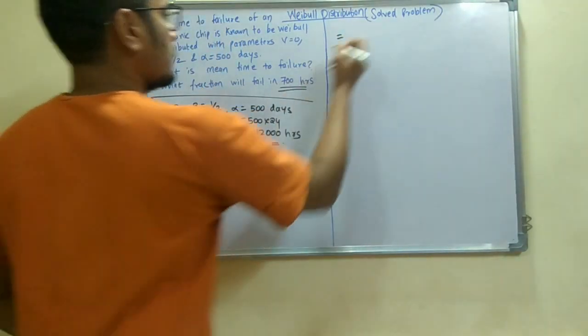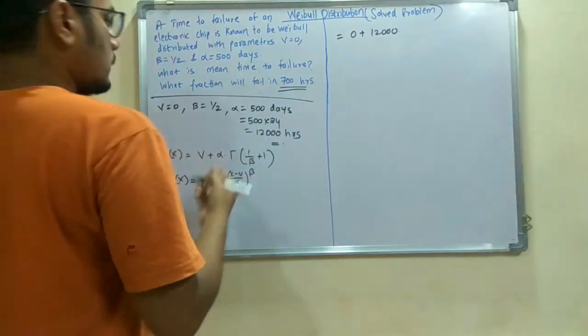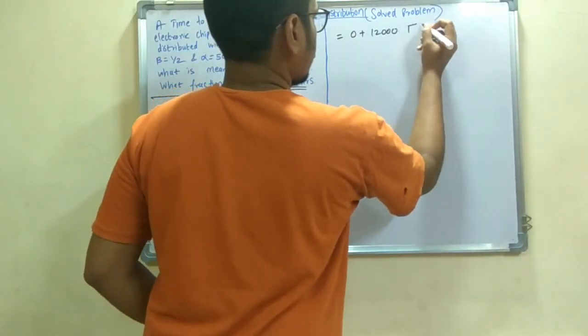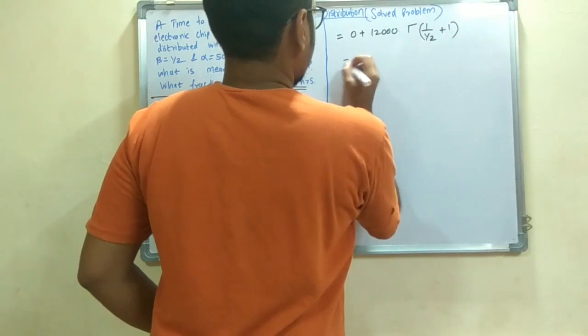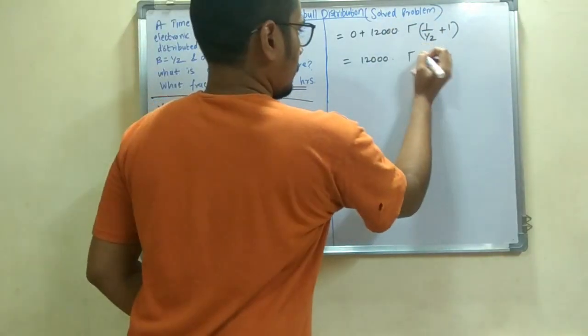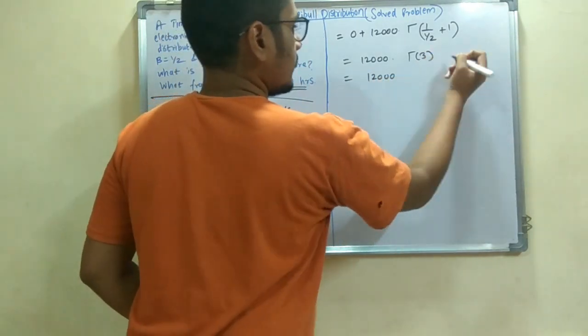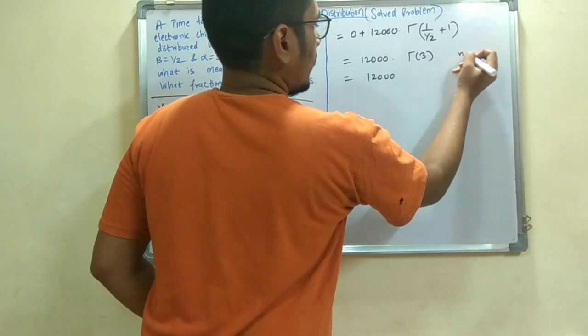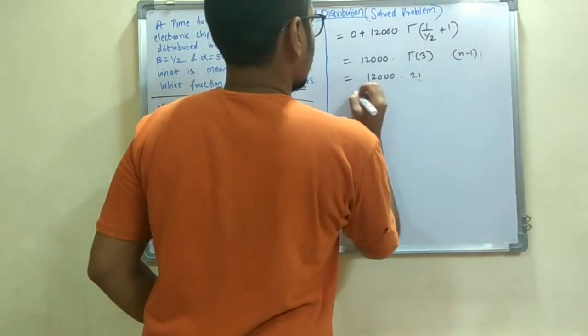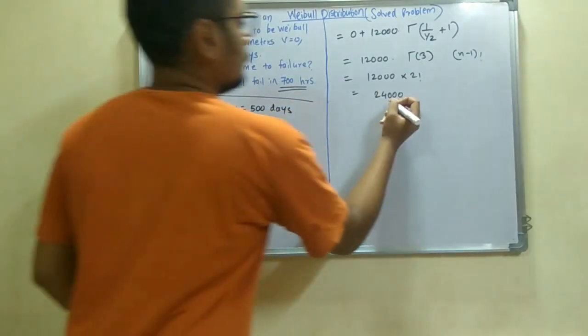So we have this parameter v as 0, then we have alpha as 12,000, and then multiplied by gamma of 1 by beta. So beta will be half, plus 1. So this will turn out to be 12,000 multiplied by gamma of 3, and this is n minus 1 factorial, so 3 minus 1, that is 2 factorial. So 2 factorial is 2. So the answer would be 24,000. So the mean would be 24,000.